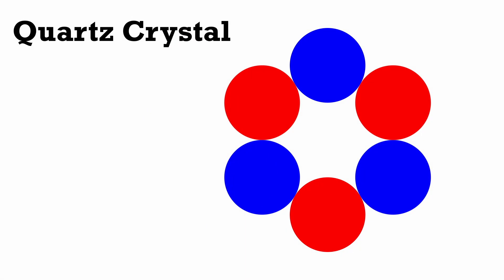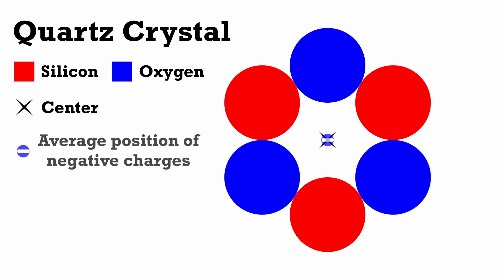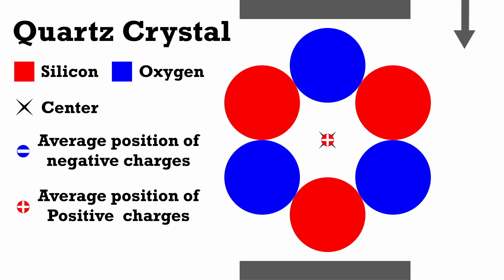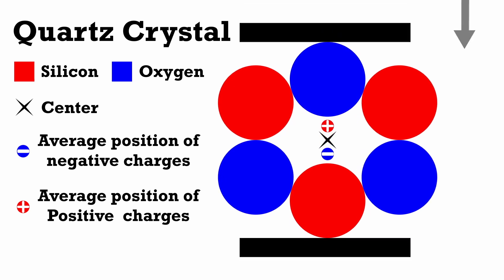Quartz is made up of silicon and oxygen. Here the red circles represent silicon, which is slightly positive in charge, and the blue represents the oxygen, which is slightly negative in charge. Right now the crystal is balanced, as the average position of the negative charges is in the same place as the average position of the positive charges. But look what happens when they are squeezed. The average position of the positive charges has shifted up, and the average position of the negative charges has shifted down, meaning there is a potential difference across the crystal.